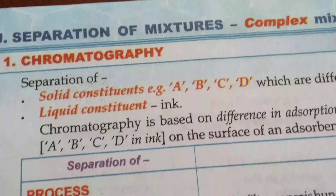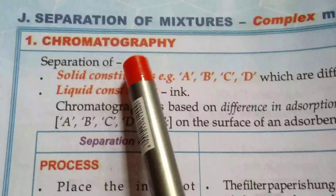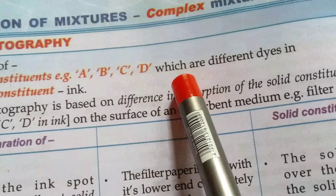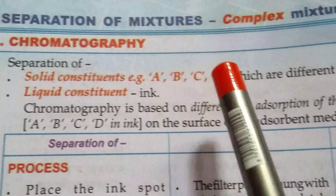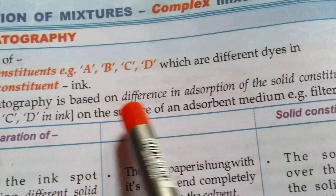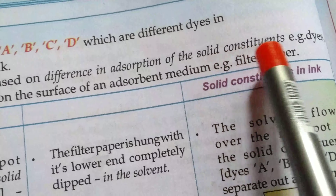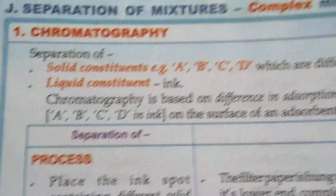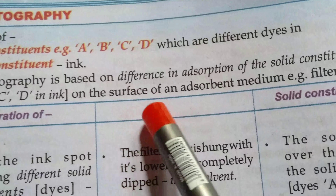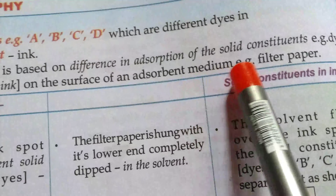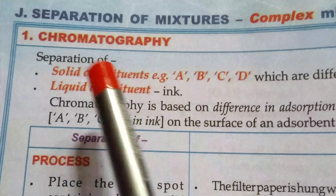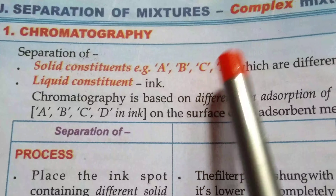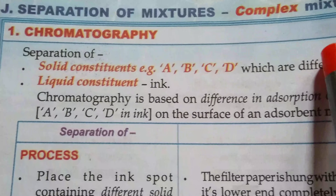Next, chromatography — separation of solid constituents like A, B, C, D which are different dyes in a liquid constituent such as ink. Chromatography is based on the differences in the absorption of solid constituents from dyes on the surface of the adsorbent medium and the filter paper. Chromatography is a process by which we can separate out any ink particles from the liquid particles.